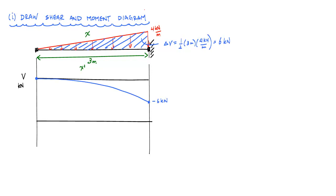That also tells me my reaction at the support should be six kilonewtons upward. Now for the moment diagram: if the shear diagram is x squared, then the moment diagram will be on the order of x cubed, with units of kilonewton-meters. Again starting at zero at the free end — since shear is negative here, the moment will have a negative slope — and at zero shear I should have zero slope for the moment.